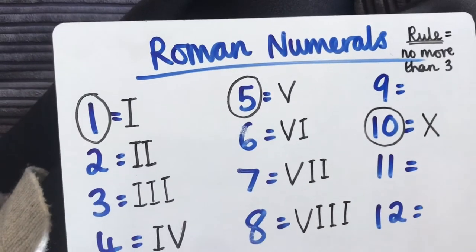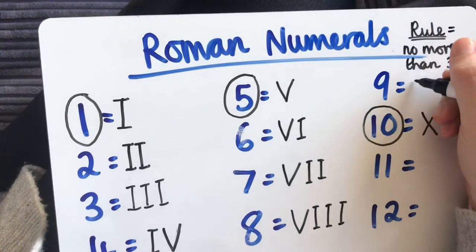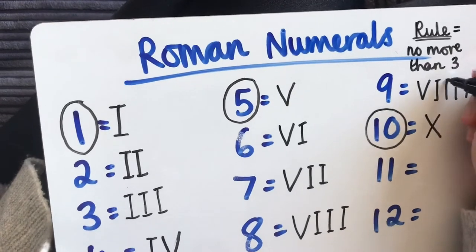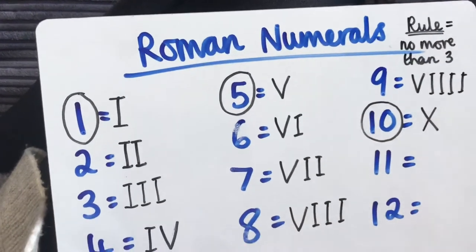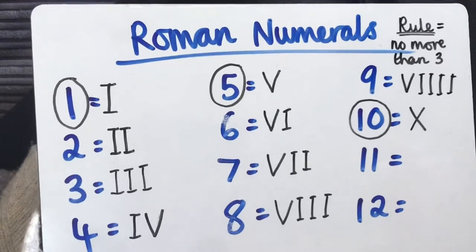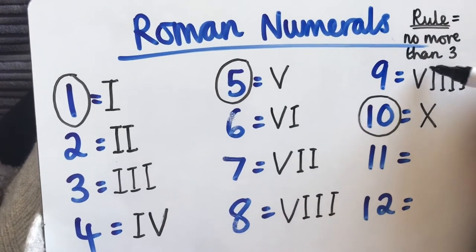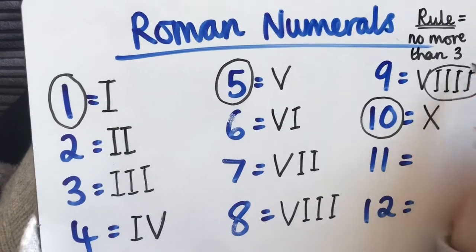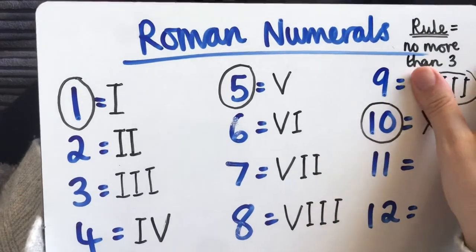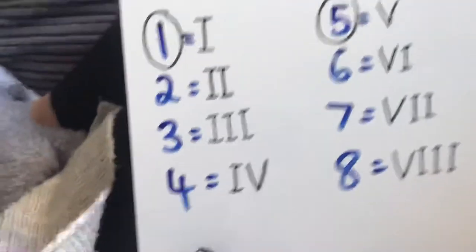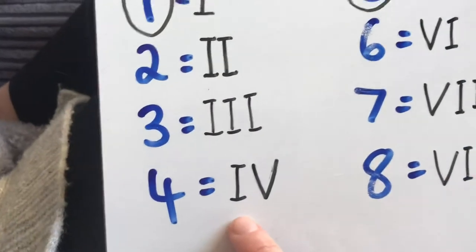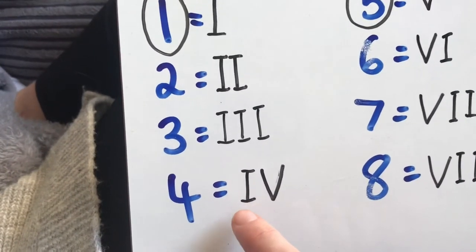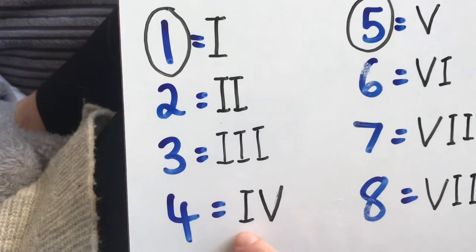The number 9 is not going to be this then, is it? Because that breaks the rules. Our rule is you can only have three of the same symbol in a row. So here, five, six, seven, eight, nine. That doesn't work because you've got four I's in a row. If you look at the number 4 here, we had one before 5, which is the number 4.